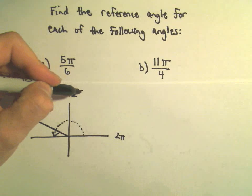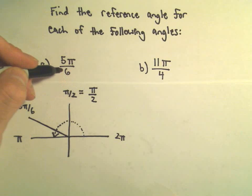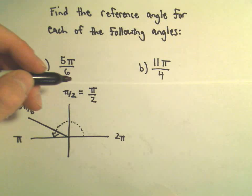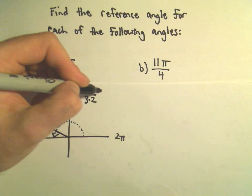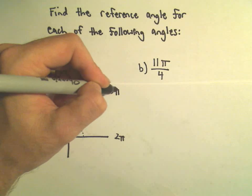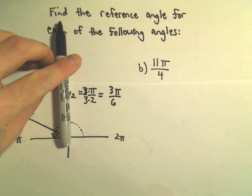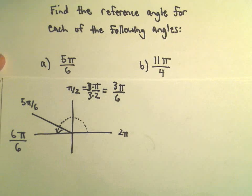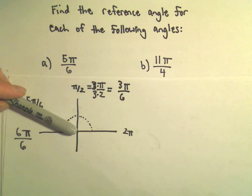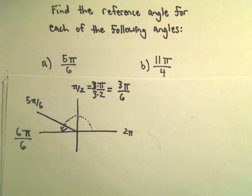If you think about π over 2, if you make it into a denominator of 6, you could multiply the numerator and the denominator by 3. That would give us 3π over 6. So I know 3π over 6 puts me at the top. Equivalently π would be 6π over 6. So I know 5π over 6 is somewhere there in between the positive y axis and the negative x axis.